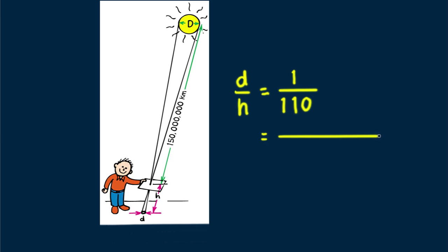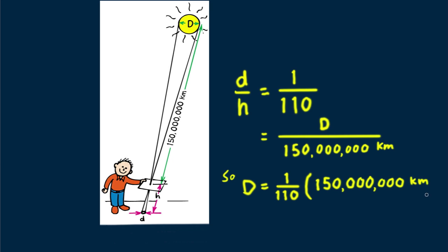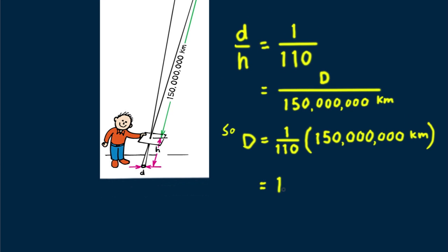When you do the math, d over h equals big D over 150 million kilometers. Solving for big D, big D is 1 over 110 times 150 million kilometers. And that equals 1.36 million kilometers. So the sun's diameter is 1.36 million kilometers, very close to its accepted value.